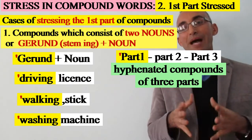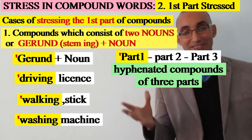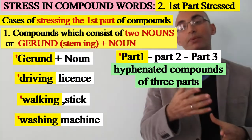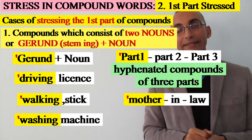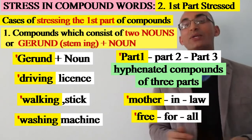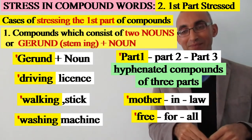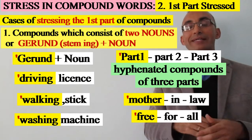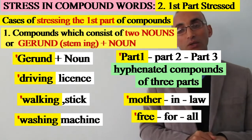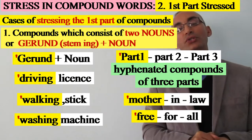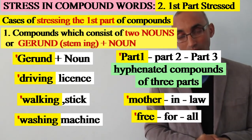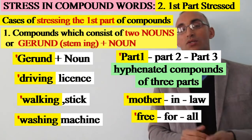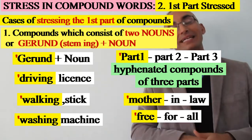Even in some cases when we have hyphenated compounds that consist of three parts and contain a short word in the middle — examples like 'mother-in-law' and 'free-for-all' — we apply the same rule and stress the first element. So I stress 'mother' in 'mother-in-law', and 'free' in 'free-for-all'. In all these compound nouns, we stress the first part and element.